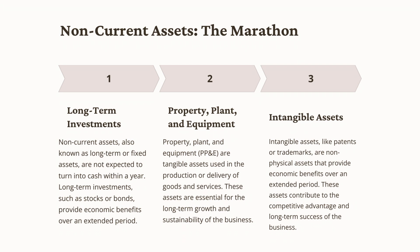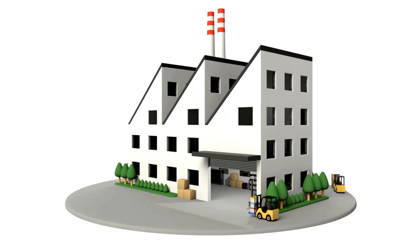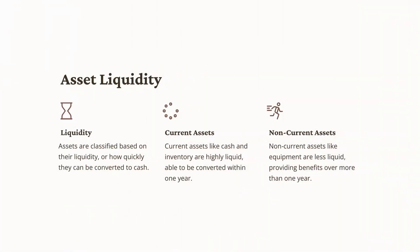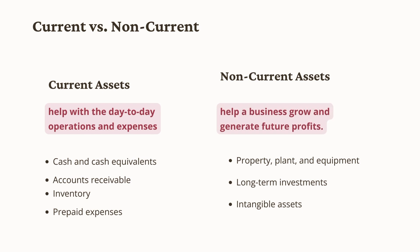On the other side of the track, we have non-current assets. Think of these as the marathon runners — they are in it for the long haul. Non-current assets are essential for long-term growth and sustainability. For example, in a manufacturing company, the machinery used to produce goods, the building where production takes place, and the land it sits on are all non-current assets. They are not expected to be sold or converted into cash in the short-term; instead, they are used over many years to help the business operate and generate income. The main difference between current and non-current assets lies in their liquidity and their role in the business: current assets help with day-to-day operations, while non-current assets are long-term investments that help a business grow and generate future profits.